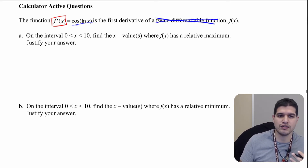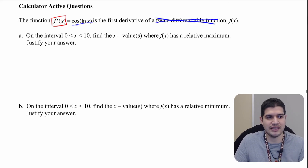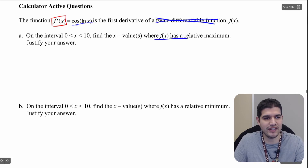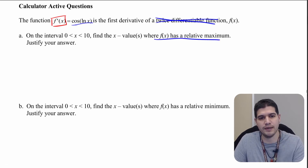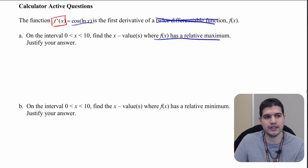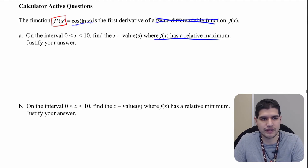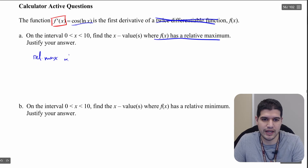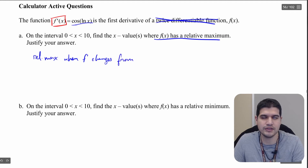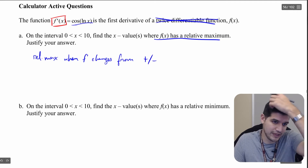In part a, on the interval 0 to 10, we want to find the x values where f of x has a relative maximum. We're given f prime, so we want to make our justification first. A relative maximum is where we're going from increasing to decreasing, which means that f prime is changing from positive to negative.